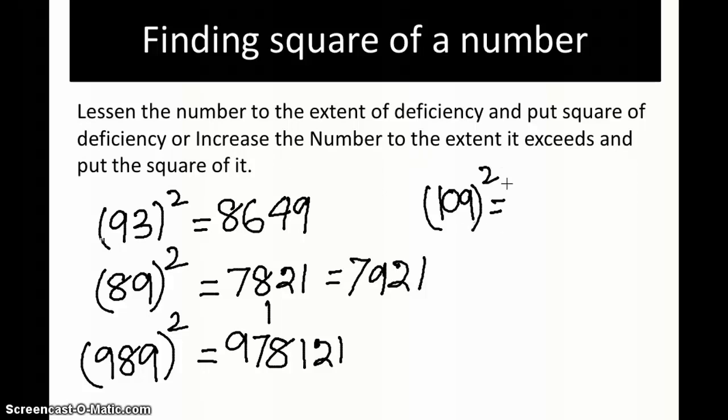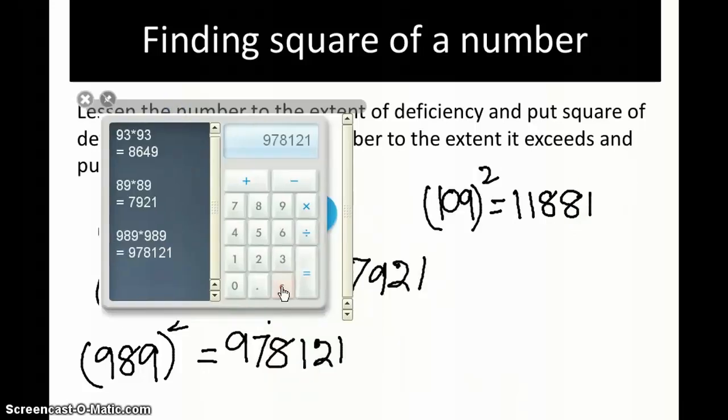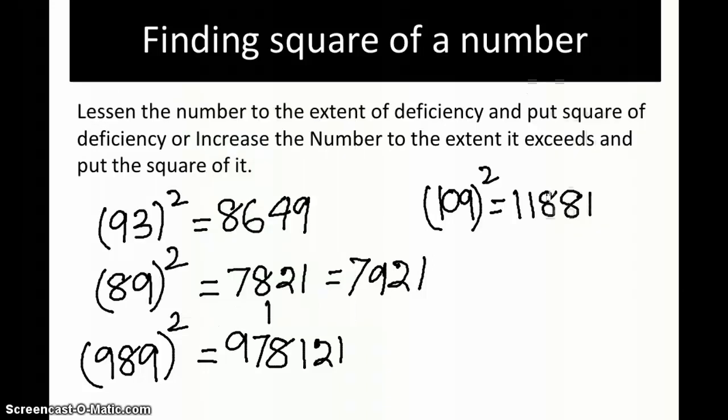It exceeds the base, which is 100, by 9. So increase it by that, which is 109 plus 9, so it becomes 118. Then put the square of the increased part, which is 9, so 81 is the square. The answer is 11881. Let's check: 109 into 109 equals 11881. That's all.